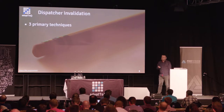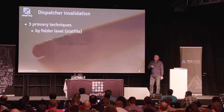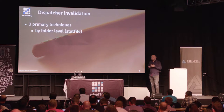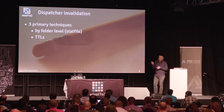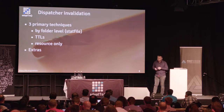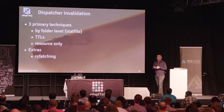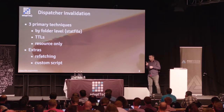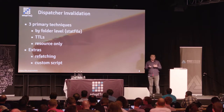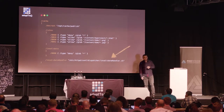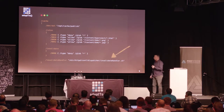Speaking of dispatcher itself, there are three primary techniques. You can use stat files — that's a built-in functionality, not ideal but usable for invalidation. You can use TTLs and narrow the scope to a single resource. There's also refetching, a handy feature that can pre-populate assets in the dispatcher cache. Most importantly, you can extend dispatcher invalidation through a custom script specified in your configuration — you have a document root, cache rules, and at the bottom, a script that can be really useful.